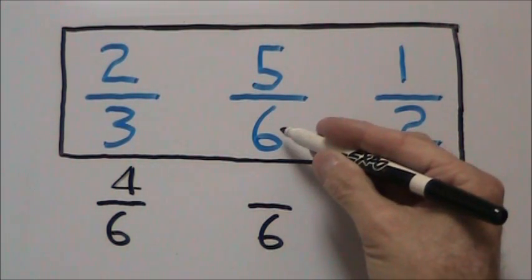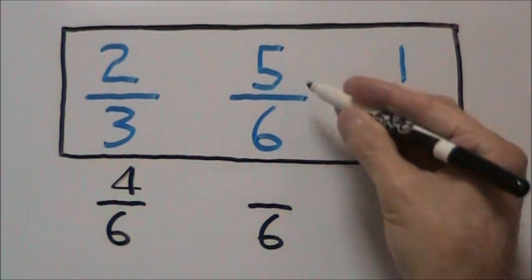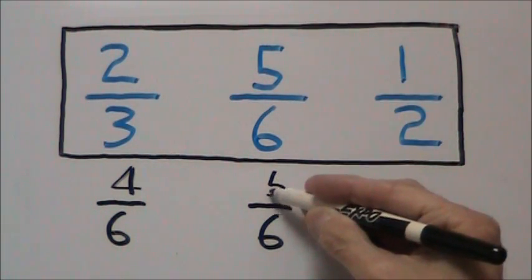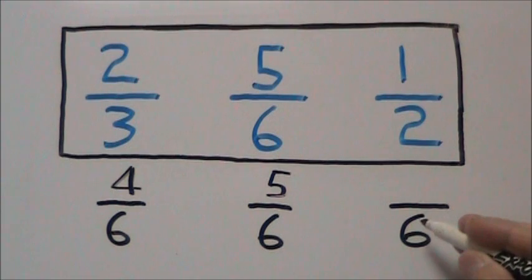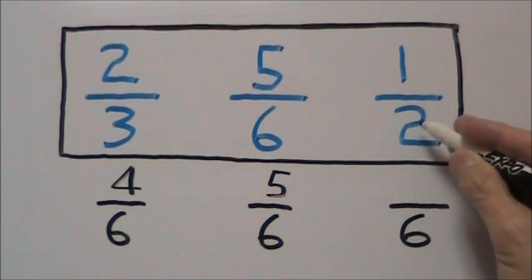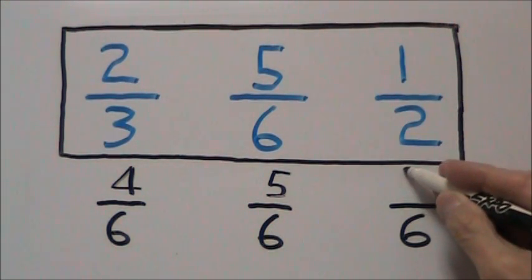Take this six divided by six to get one, multiply it by five to get five. Take our last six divided by two to get three, multiply it by one to get three.